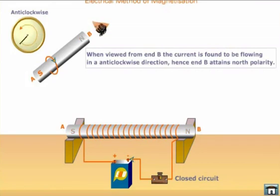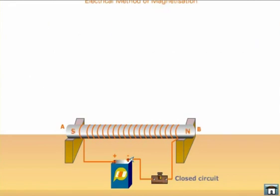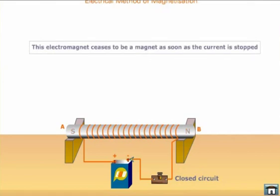If it is a steel bar, it becomes a permanent magnet. If the bar is a soft iron bar, then it becomes a strong bar magnet and is called an electromagnet. This electromagnet ceases to be a magnet as soon as the current is stopped.